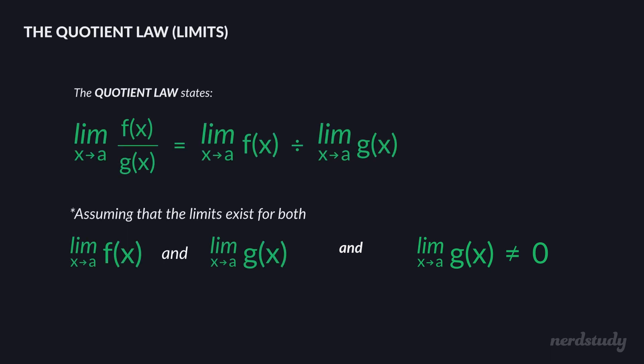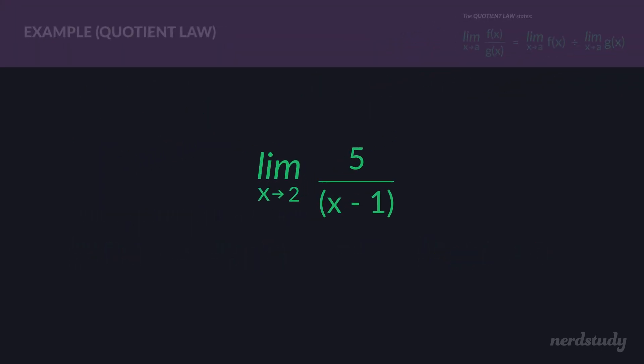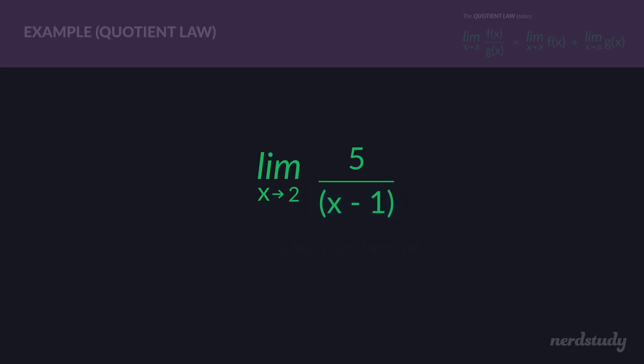Let's try an example. We have the limit as x approaches 2 for 5 divided by x minus 1. The numerator is a constant — a limit will always exist for a constant. The denominator is a linear function — a limit will always exist there too. The only thing to watch out for is whether the denominator's limit becomes zero. If it does, you can't use the quotient law; but that won't be the case here.